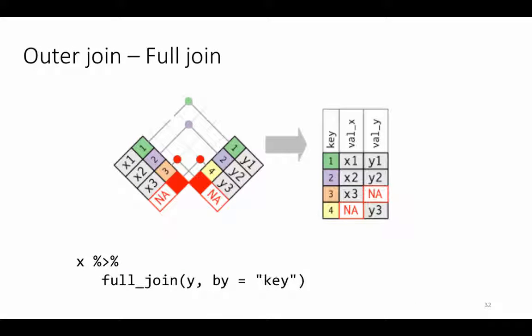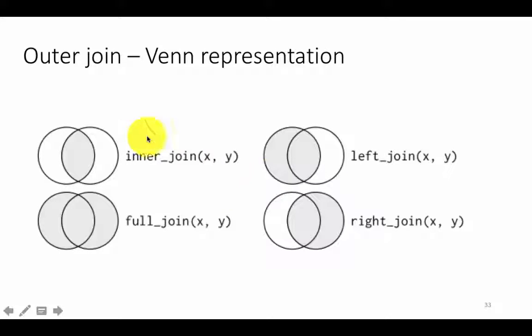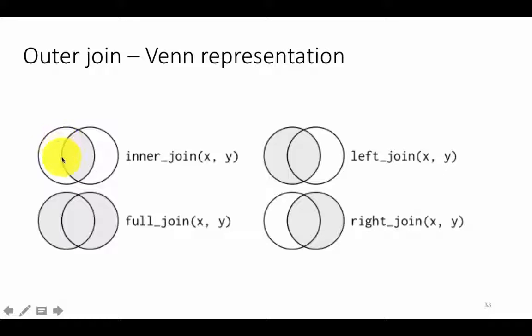Let's look at the visualization of joins in a slightly different way. We could use Venn diagrams to represent this. The circle on the left-hand side represents the first data frame, or x, and the circle on the right represents y.